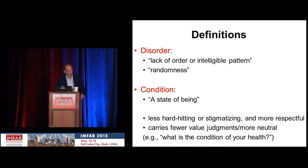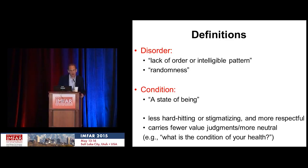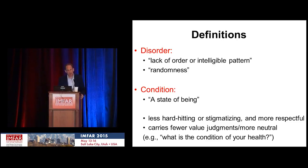So what is my issue? Let's start with definitions. The word 'disorder' is defined as the lack of order or intelligent pattern, or randomness — and I would question whether this is really the word we want to use for autism. I've been using the phrase 'condition' instead of 'disorder' in publications over the last 15 years or so. The definition of 'condition' is a state of being. It's less hard-hitting, less stigmatizing, more respectful, and carries fewer value judgments. It's more neutral.